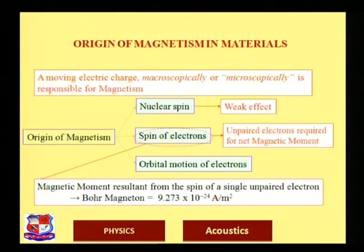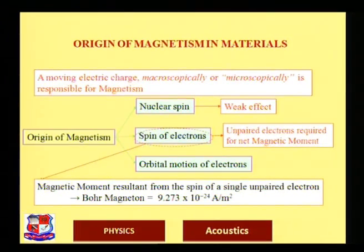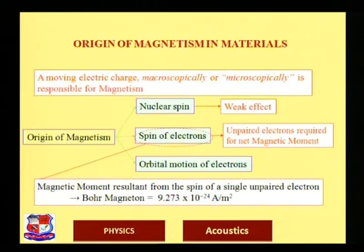This is true both macroscopically and microscopically. In an atom, there are two or three types of motion relevant to magnetism: nuclear spin, spin of electrons, and orbital motion of electrons. Nuclear spin produces a very weak effect. Due to the spin of unpaired electrons, when they mobilize themselves, there is a net magnetic moment created — and that is the origin of any type of magnetism in a material.